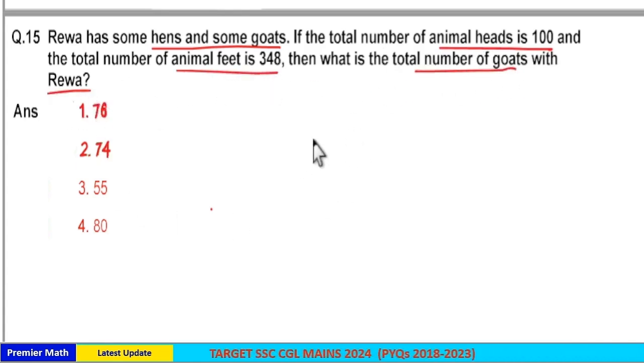Here you can use the allegation method. You know hen has two legs and goat has four legs, and here the total number of legs is 348.